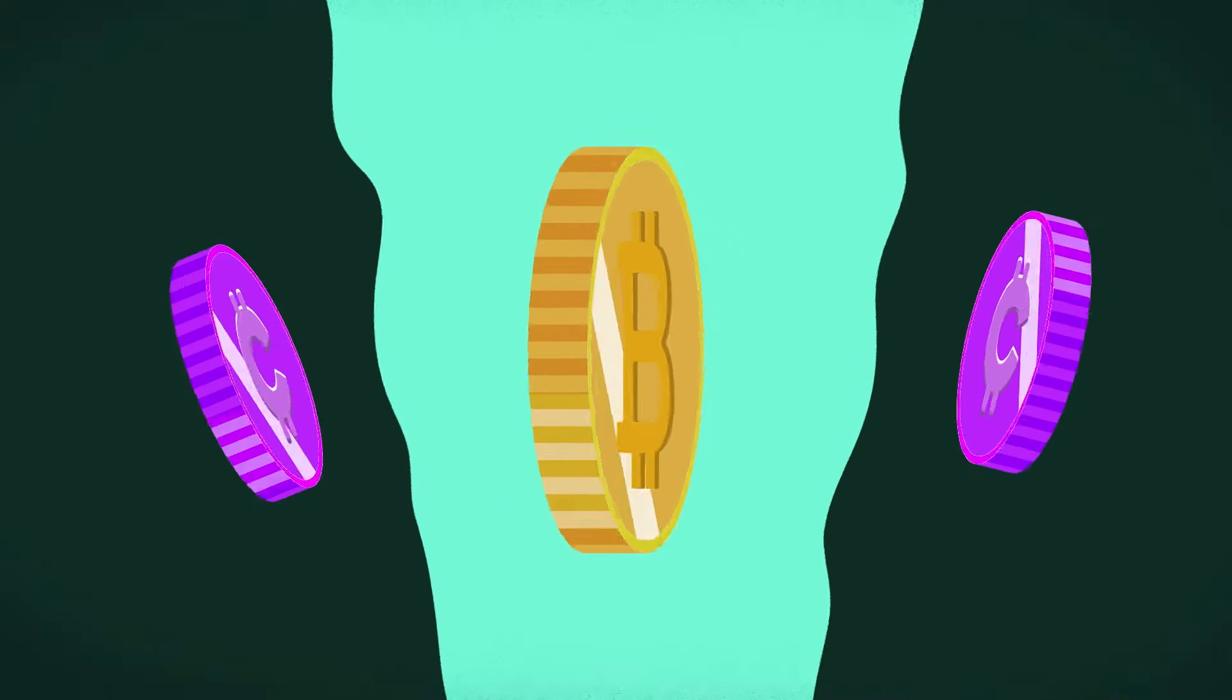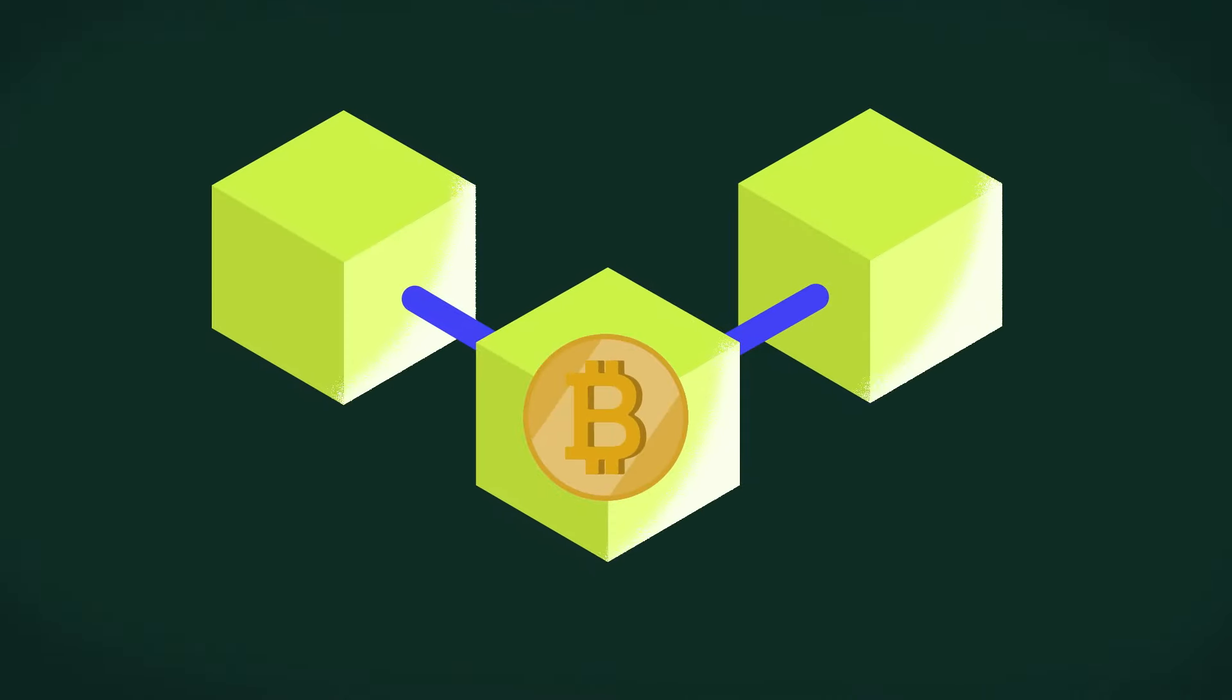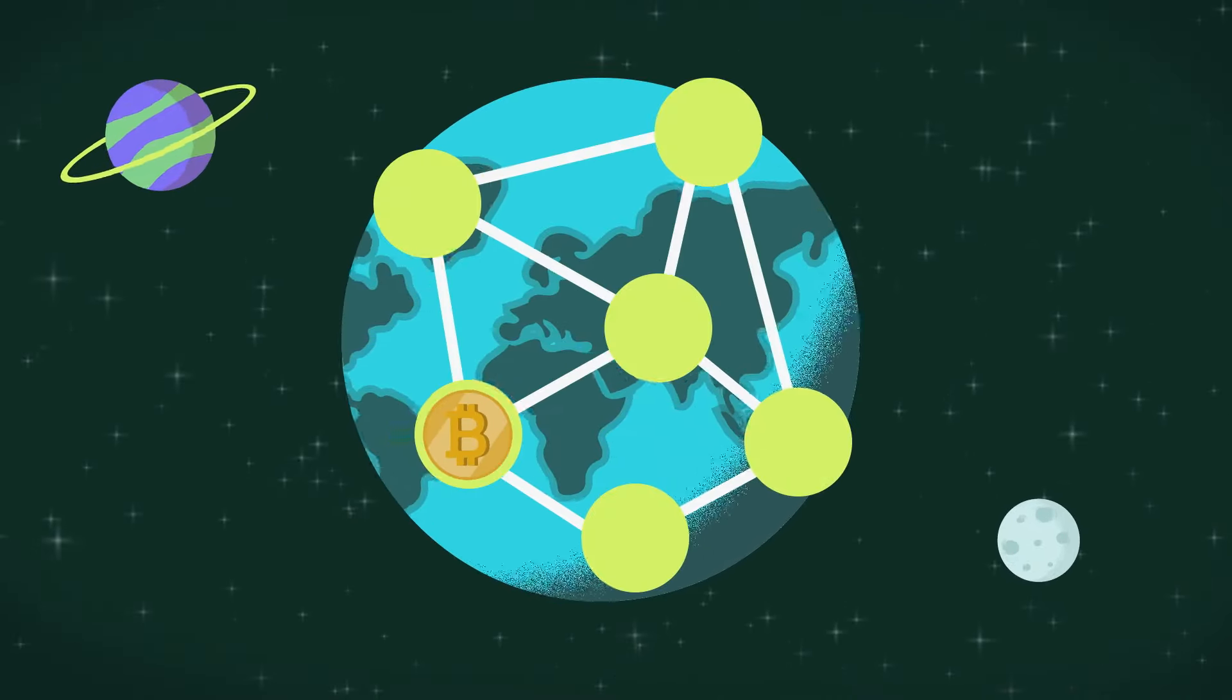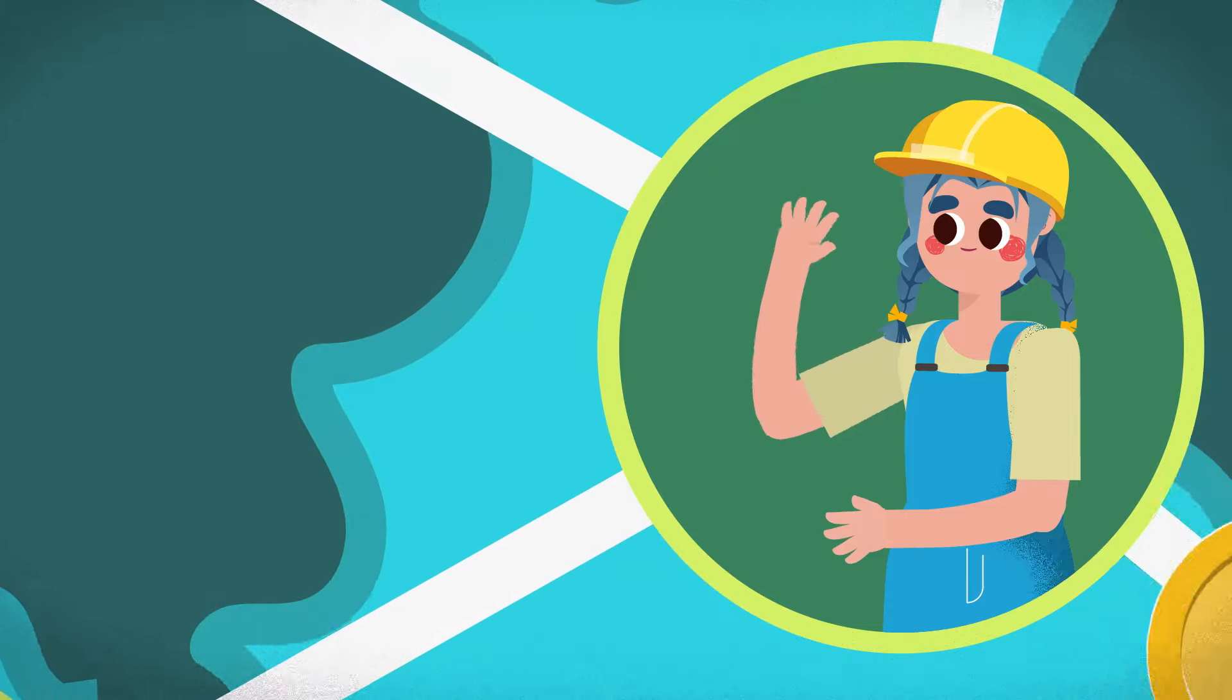Bitcoin is a cryptocurrency that operates on a decentralized blockchain powered by globally distributed nodes. Whenever a transaction is made,